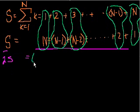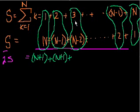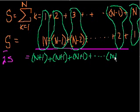What's 1 plus N? That's just N plus 1. What's 2 plus N minus 1? That's also N plus 1. What's 3 plus N minus 2? It's N plus 1. And we just keep doing that. And what's N minus 2 plus 2? N plus 1. And what's N plus 1? That's just N plus 1, of course.